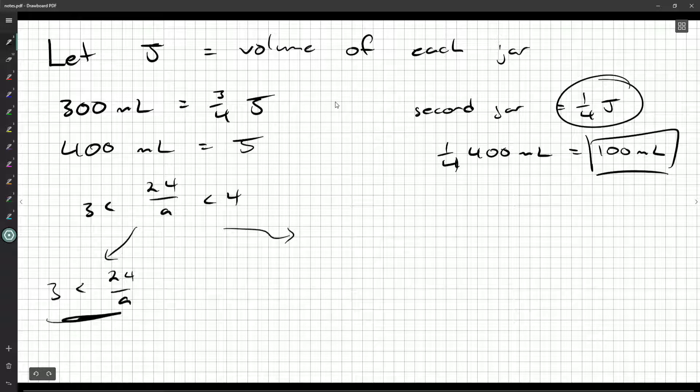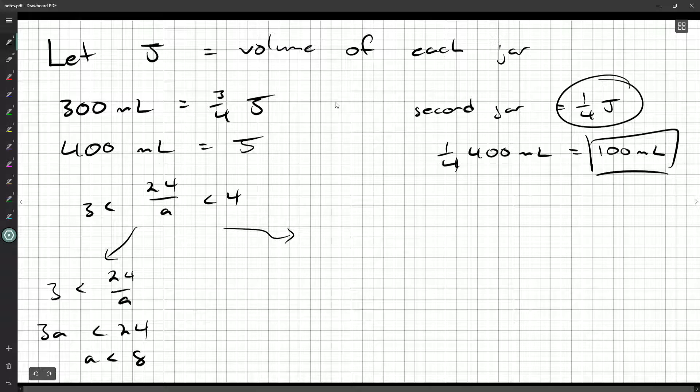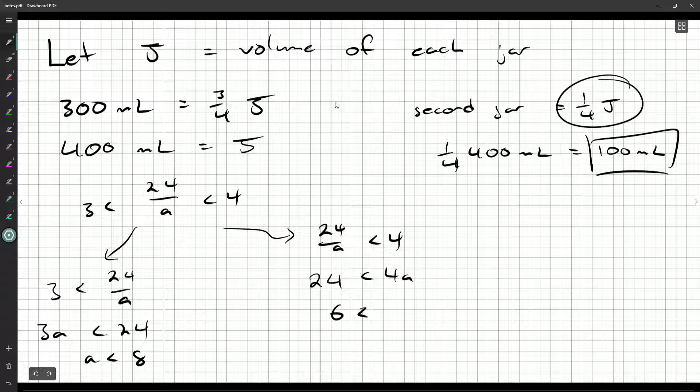And so when I write it like this, I mean this inequality has to be true for the whole thing to be true. We can just very easily focus on it. Multiply both sides by A, you'll get 3A is less than 24. Divide by 3 and you'll get A is less than 8. How about over here? If you take the last two in the inequality, you'll get 24 over A has to be less than 4. Multiply by A on both sides, divide by 4, you'll get A has to be greater than 6.